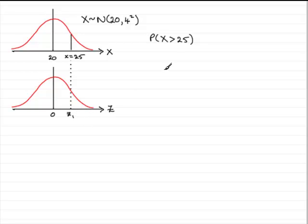We're being asked for the probability that x is greater than 25, which is represented by the area to the right of 25, equivalent to the area to the right of z1. We need to work out what z1 is.